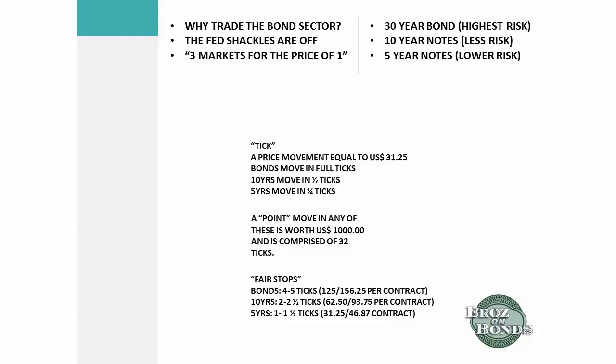For you guys with small accounts or who are very risk-averse, 5-year notes can be traded with a one-tick or tick-and-a-half stop. I've been using a tick-and-a-quarter stop lately, and I'm risking about $37 per contract to trade 5-year notes. As one of my old clients pointed out, your margin is much much lower on 5-year notes than on 30-year bonds.